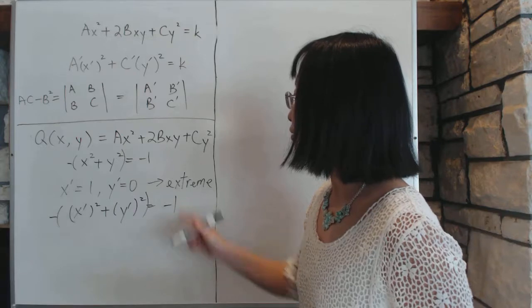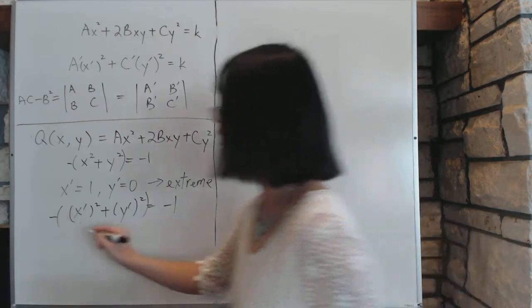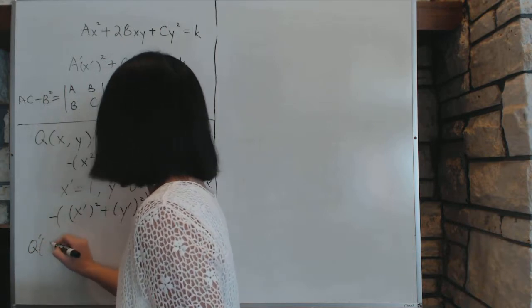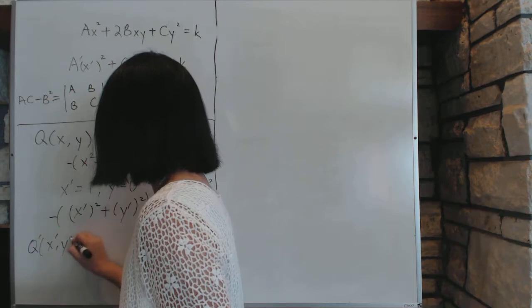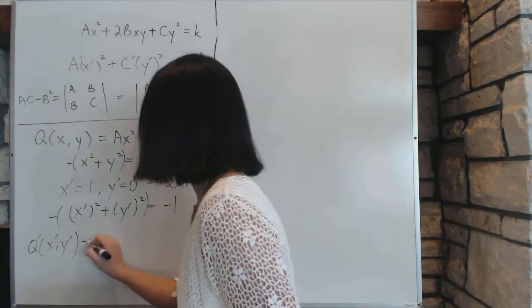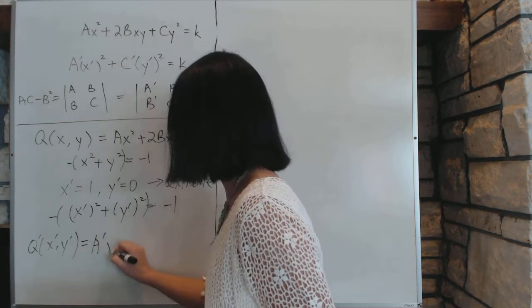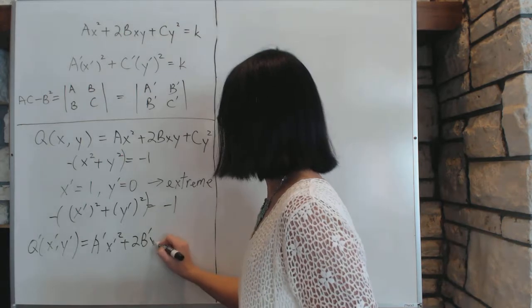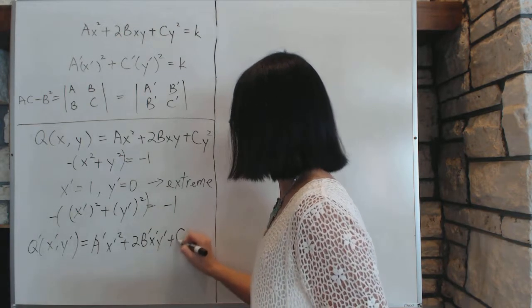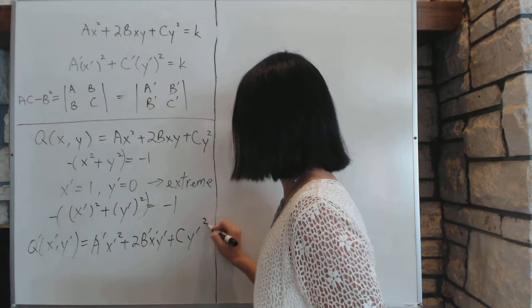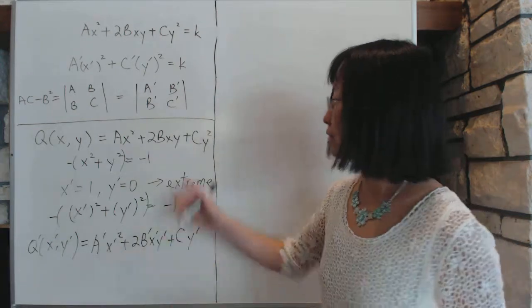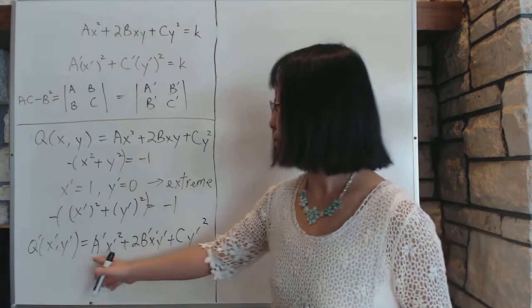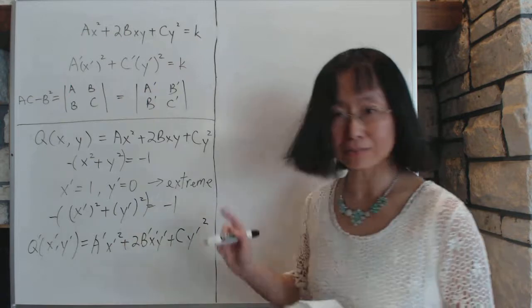So we will write down our new equation for this thing after this process takes place as Q prime, which looks exactly like Q prime x prime, y prime. It's going to look exactly like this one, except you just put prime on every single thing. a prime x prime squared plus b prime x prime y prime plus c prime y prime squared. So after that turning of the axis, and we substitute that x equal to sine, cosine, and all that stuff, we will come up with something like this. We don't know what the values are, but we know this is possible.